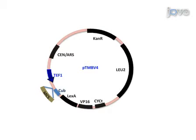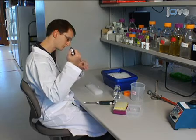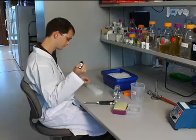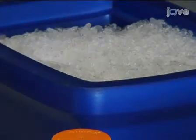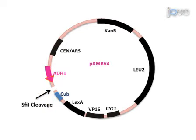The bait must be cloned into an appropriate vector for tagging and expression. A variety of tMYTH vectors are currently available, such as PTMBV4, PAMBV4, and PCMBV4, which allow the construction of C-terminally tagged baits under the control of a very strong, strong, and weak promoter respectively. Once the tMYTH vector has been selected, restriction digest the plasmid at the appropriate restriction site. Cleavage should occur only in the immediate vicinity of the CUB-LexA-VP16 tag — upstream of the tag for C-terminal tagging, or downstream for N-terminal tagging. For example, when using the PAMBV vector, SFI1 is an ideal choice.